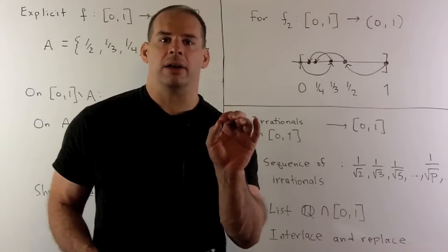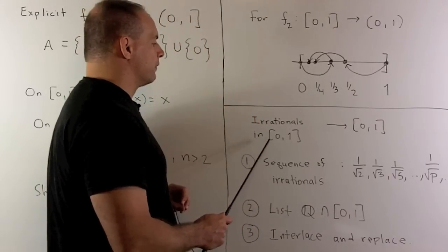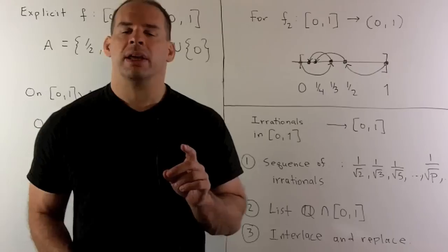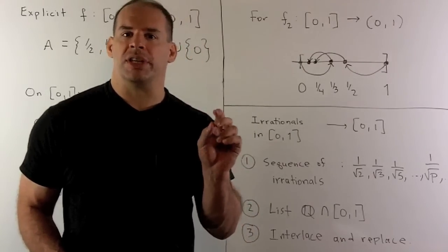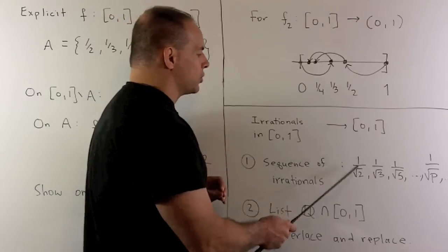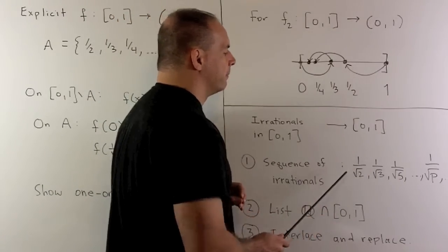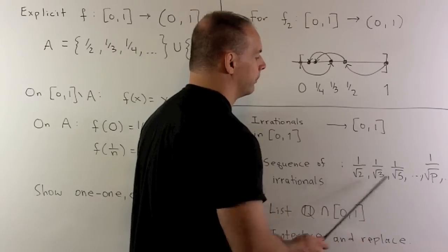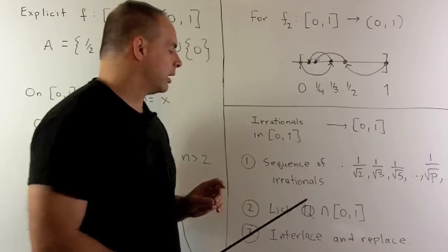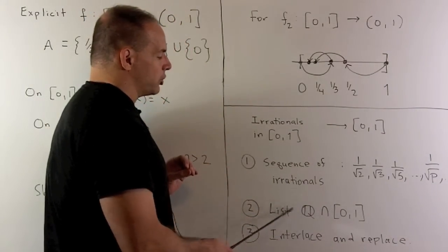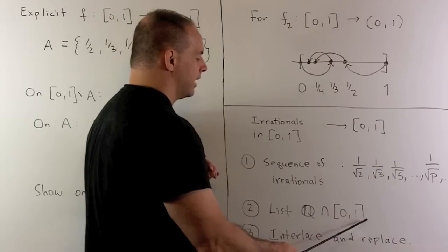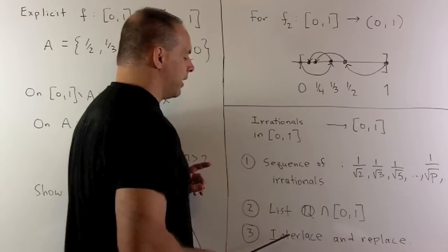Taking this one step further, I can show that the rationals in the closed interval [0,1] have the same cardinality as the closed interval [0,1]. The outline: same idea — I'll use a sequence, but here I don't want a sequence of rational numbers, because I want to stay in the set of irrationals. So I'll use the sequence 1/√2, 1/√3, 1/√5 — all numbers of the form 1 over the square root of a prime. You may need to verify that these are indeed irrational. Then, since the rationals are countable, I enumerate the rationals in [0,1] as a sequence, and interlace it with the irrational sequence as before.